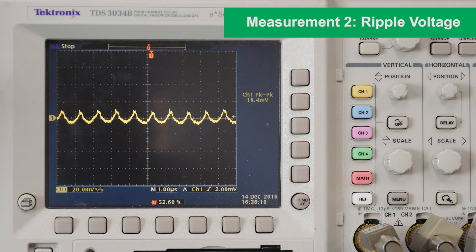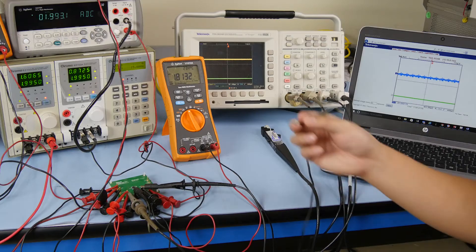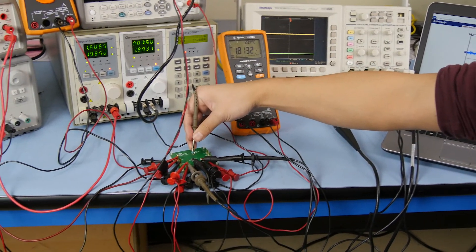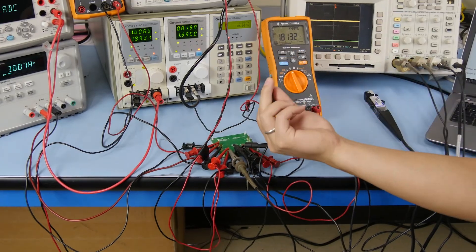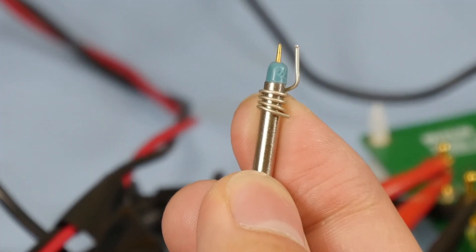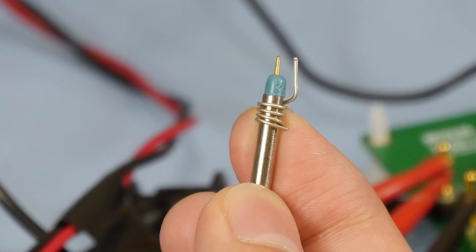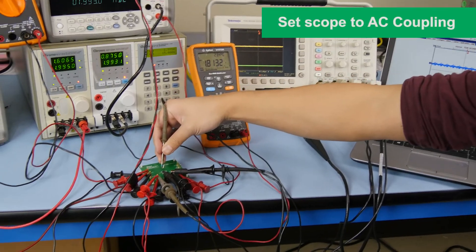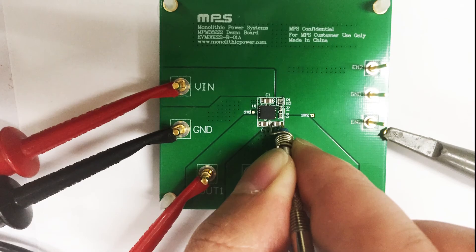Next, we are going to measure ripple voltage. With the same test setup, we connect the scope probe to the output ceramic capacitor. The measurement loop of the probe needs to be as small as possible to avoid any unwanted noise. Set the scope to AC coupling and capture waveform.